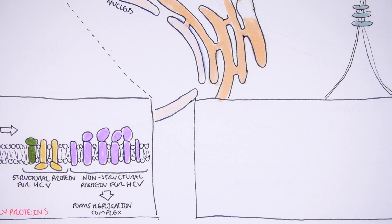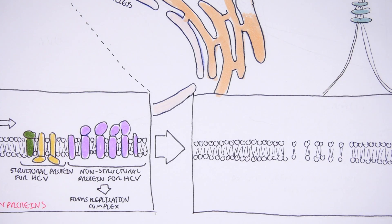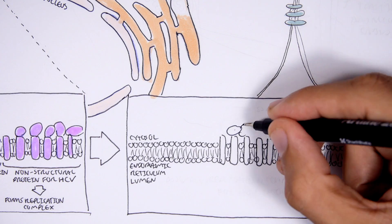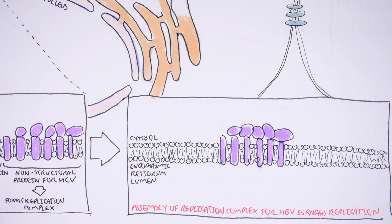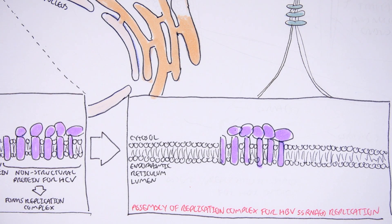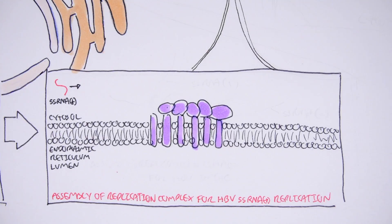Let's focus on what this replication complex is. Here again we have the endoplasmic reticulum membrane, the endoplasmic reticulum lumen, and the cytosol of the cell. The non-structural proteins will assemble to become the replication complex. What the replication complex does is that the hepatitis C virus positive single-stranded RNA will be replicated by the replication complex to produce a negative single-stranded RNA.